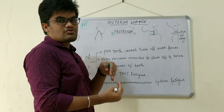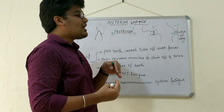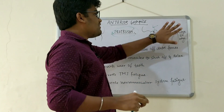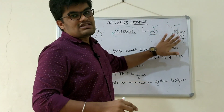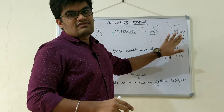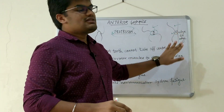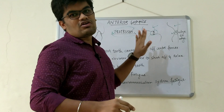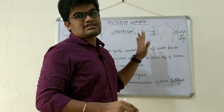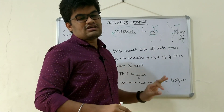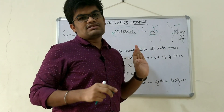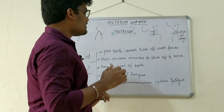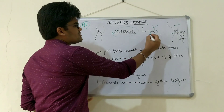In short, whenever we protrude the jaw and achieve edge-to-edge contact of the anterior teeth, there is disclusion or loss of contact in the posterior teeth. This is anterior guidance.